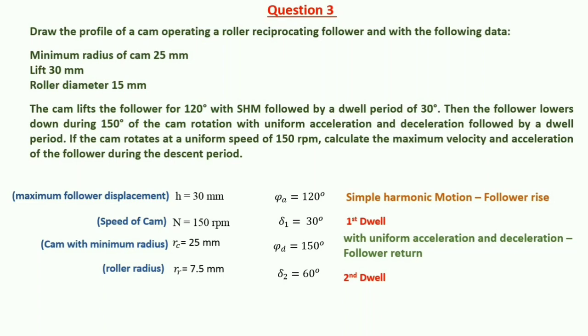We calculate the angular velocity using omega = 2πN/60, which gives omega = 5π radians per second.